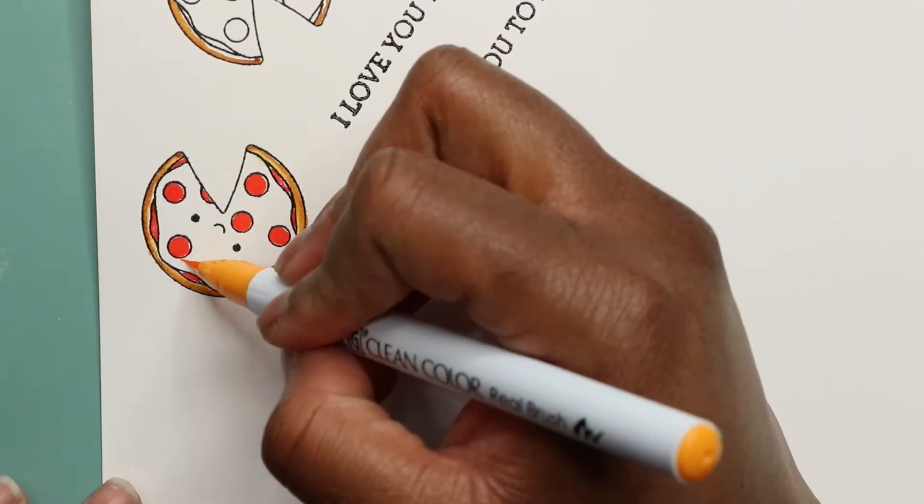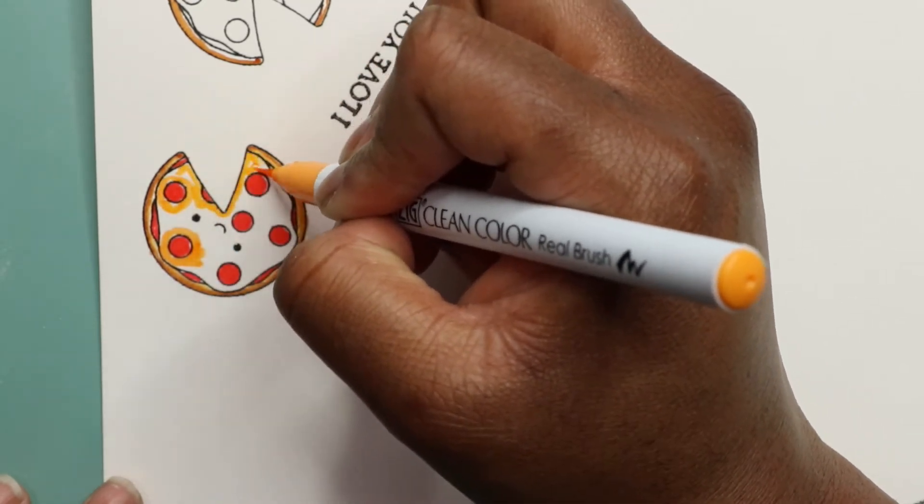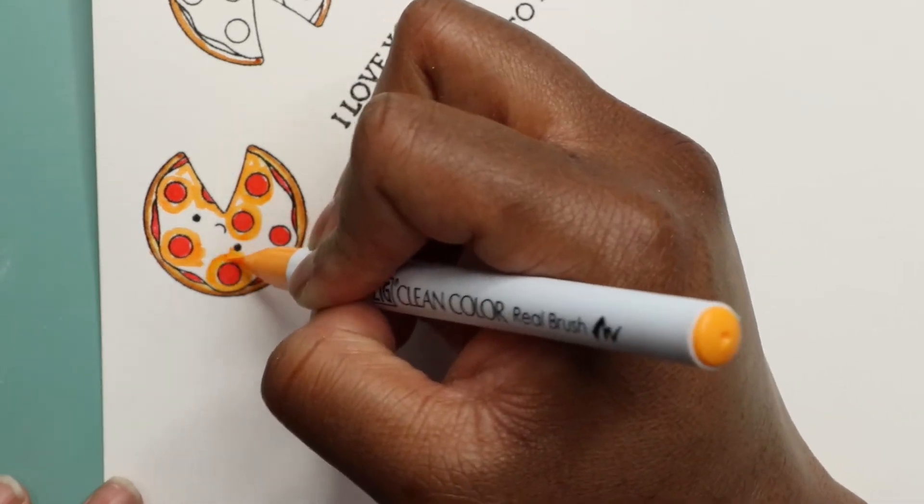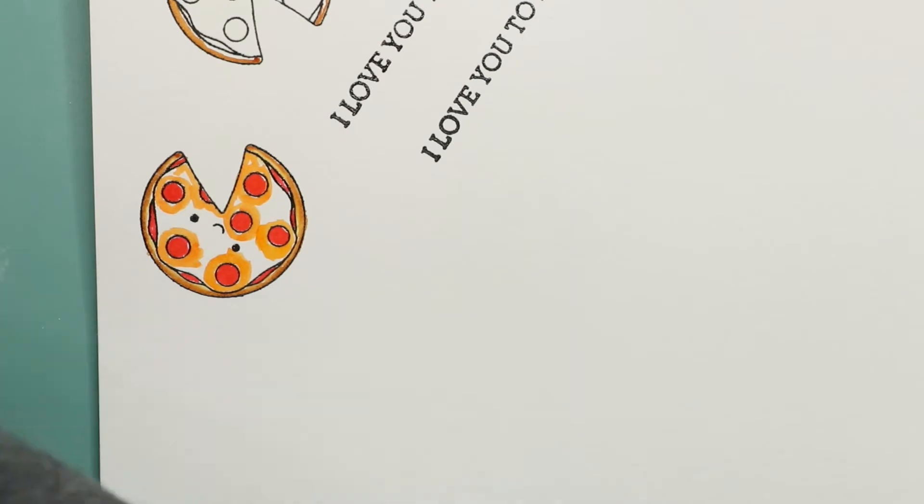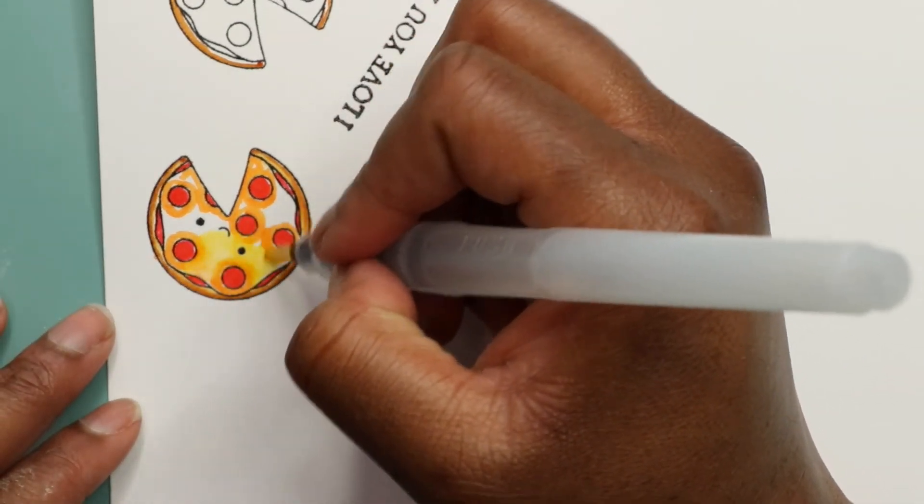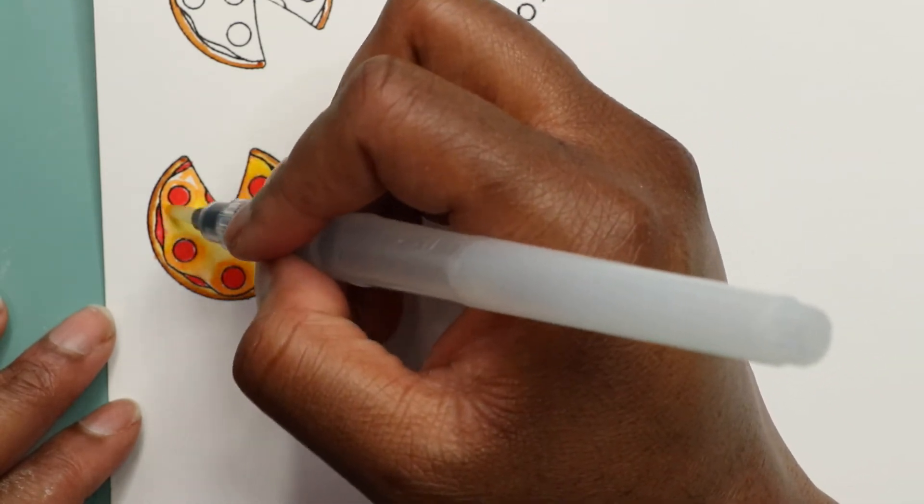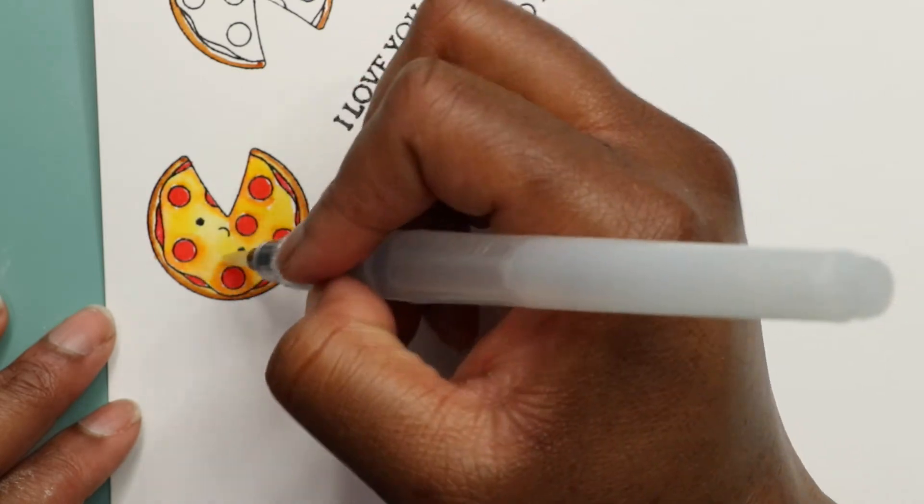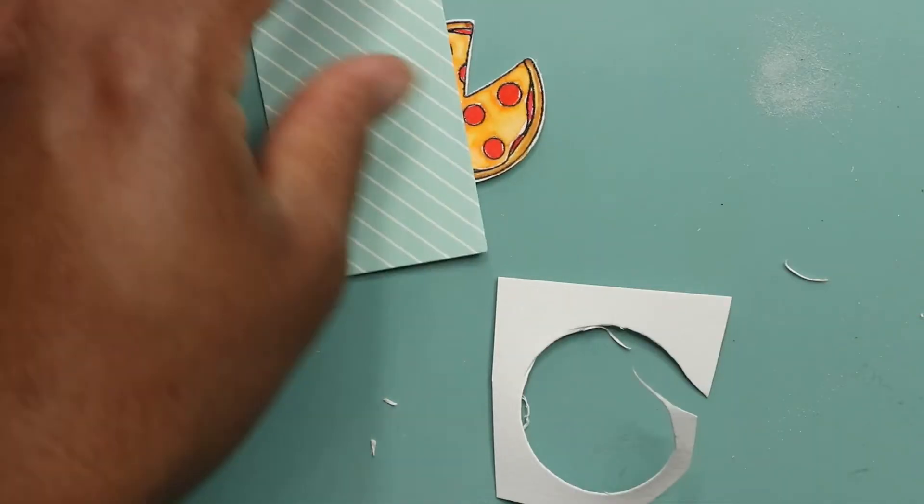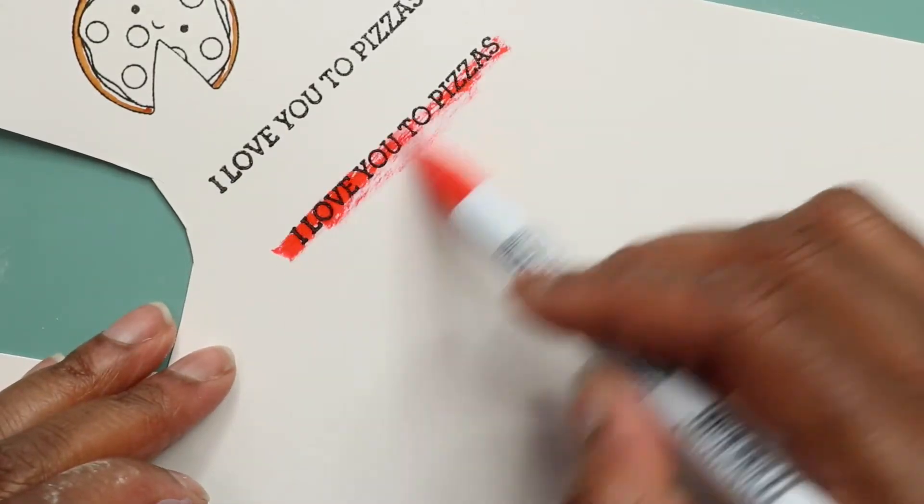For my cheese, I'm going around the edges of the pepperoni because that's where it's normally darker because of all the good old grease, and then I'm going to take a watercolor brush and just blend it out to give it dimension. I really do like using my Zigs when I'm trying to do something fast. As you can see, it works, so I just went ahead and fussy cut it out.